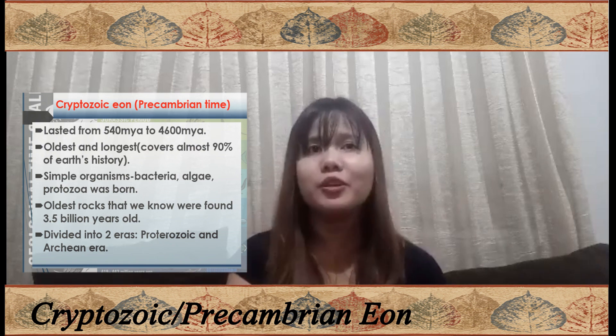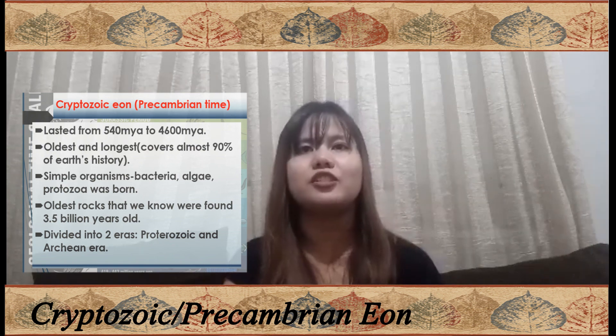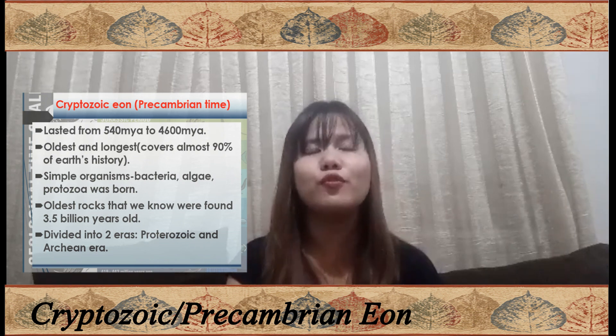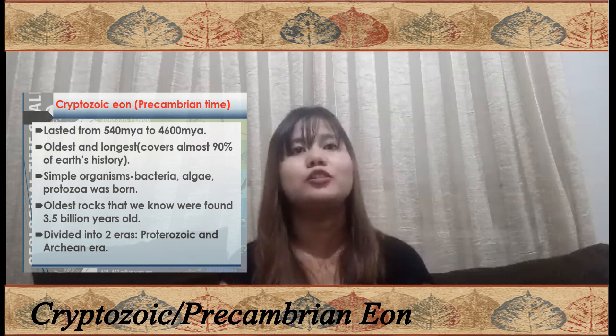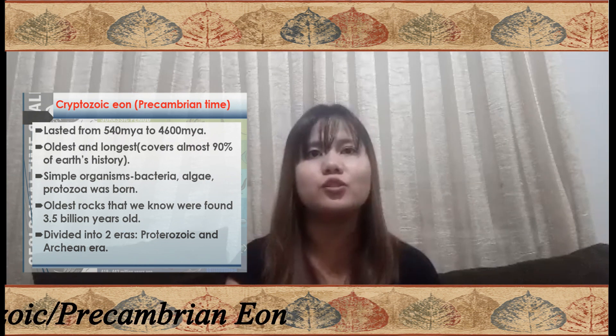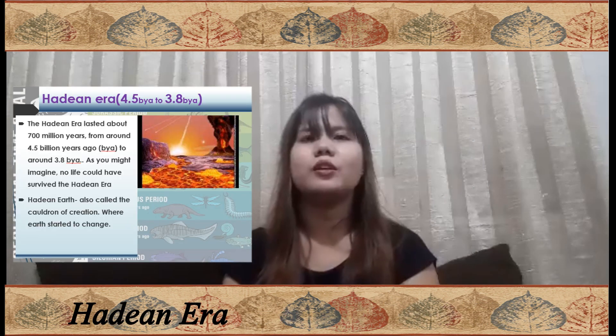Now let us look at how time is divided. First, let's talk about the Precambrian eon. The Precambrian era represents the earliest geologic ages, lasting from 540 million years ago to 4,600 million years ago, and it covered almost 90% of the entire history of the Earth. This eon is separated into three eras. First is the Hadean era, which began with the formation of the Earth from dust and gas orbiting the sun about 4.6 billion years ago.